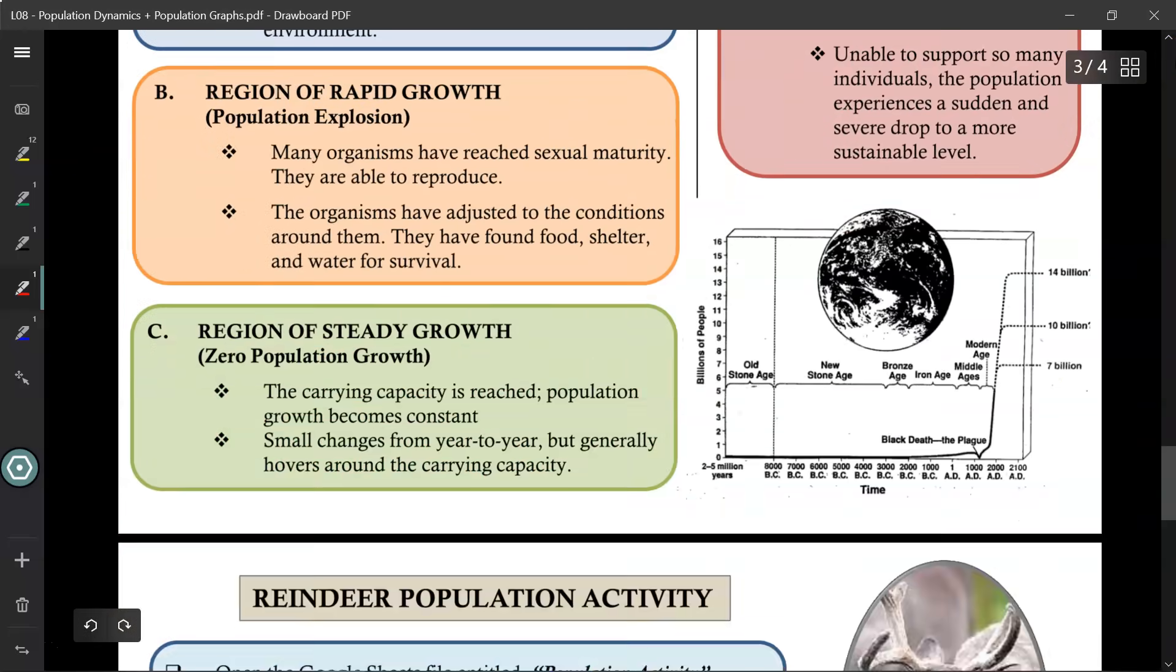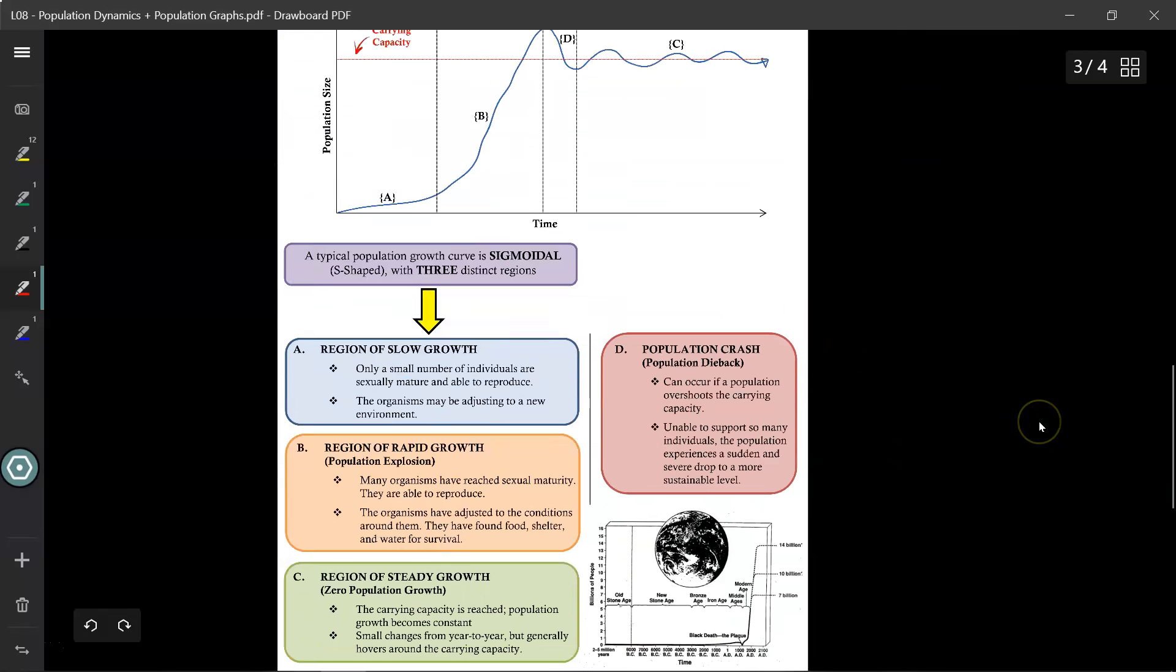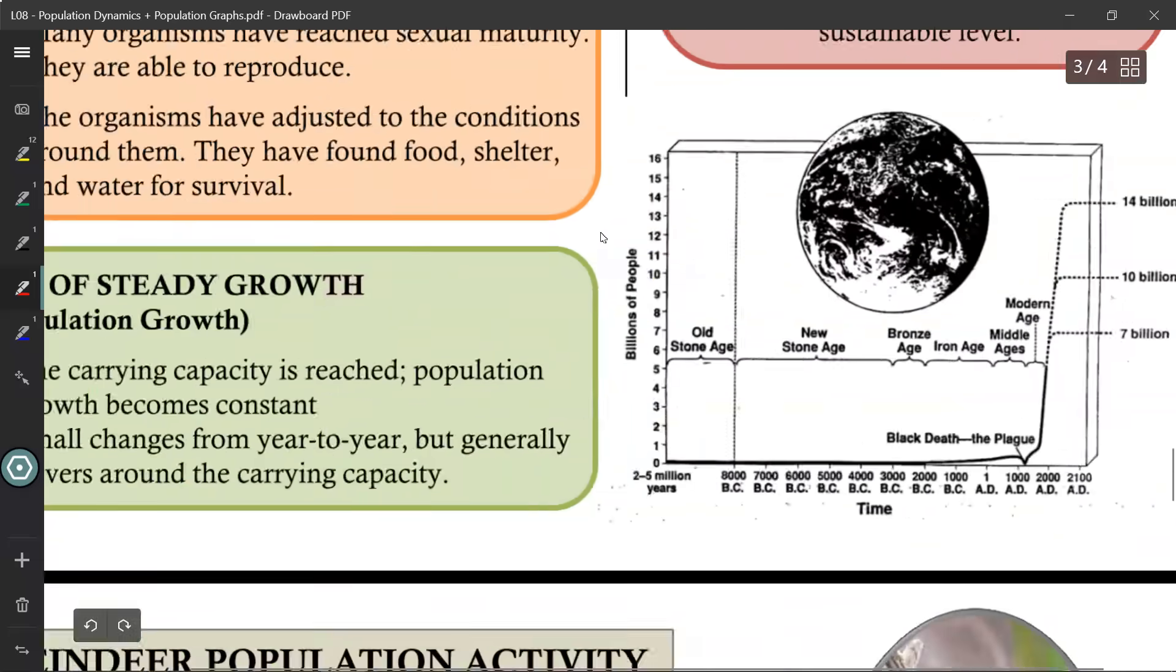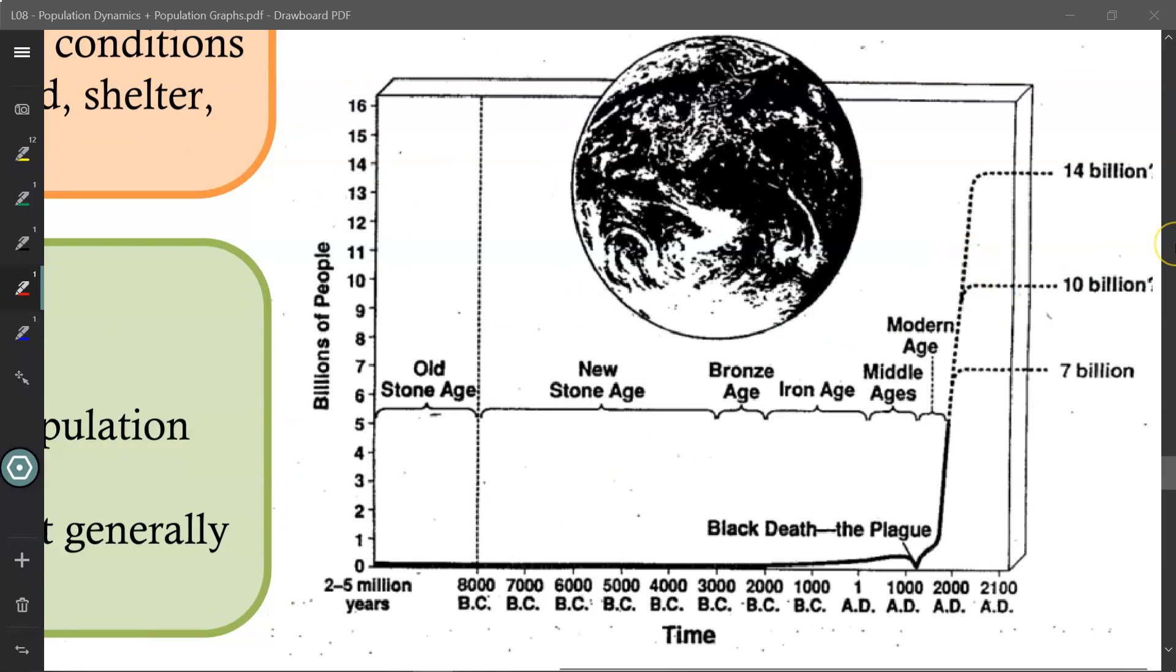Alright, so looking at the bottom over here, we see this image. This is a population curve for humans. And you'll notice that for most of our history, our population never rose above half a billion people until the last thousand years. But with the advent of modern medicine and modern technology, the Industrial Revolution, our population has begun to skyrocket. We are now in the exponential phase. But if you look back over here, what is after the population explosion phase? It's a dieback. So the question is, at what point will humans reach the carrying capacity for our Earth? Something to think about.